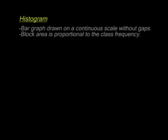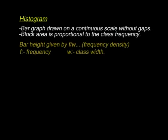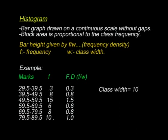A histogram is a bar graph drawn on a continuous scale without gaps. The area of each block is proportional to the class frequency. The height of the bar is obtained by frequency over class width, which is called the frequency density, where f is frequency and w is the class width. Our class width was 10. We introduce the frequency density column into the table. For the first class, 3 over 10 gives a frequency density of 0.3. Next is 8 over 10, giving 0.8, and so on.